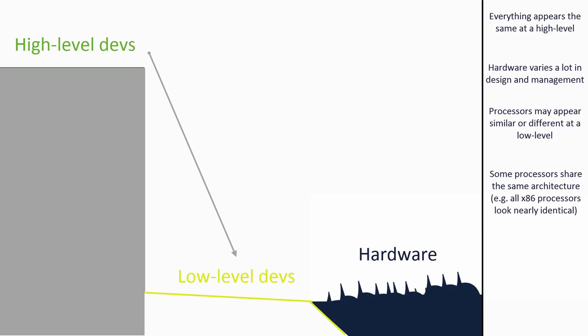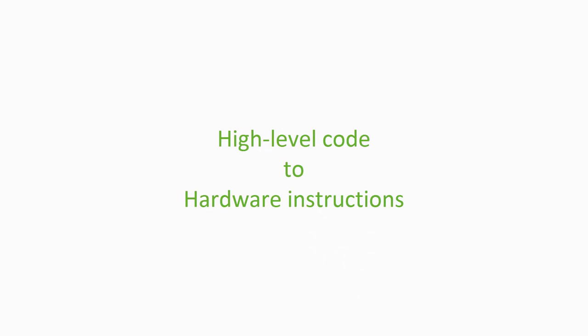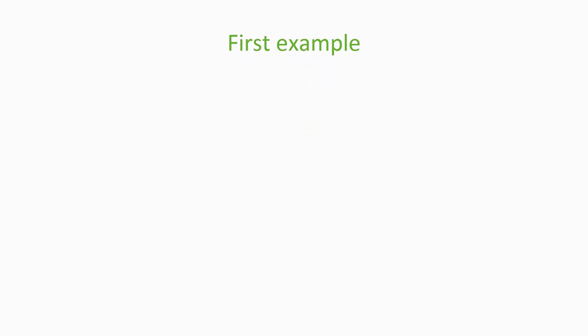So high-level developers are at the top of the cliff writing their programs, but all programs have to execute on the hardware somehow. We'll take a look at some familiar operations and how the hardware actually performs them. Here's a very basic example: z equals x plus y, where x, y, and z are integers of some kind. The language doesn't actually matter for this example, but here it is written in C and C-sharp just to help you out.